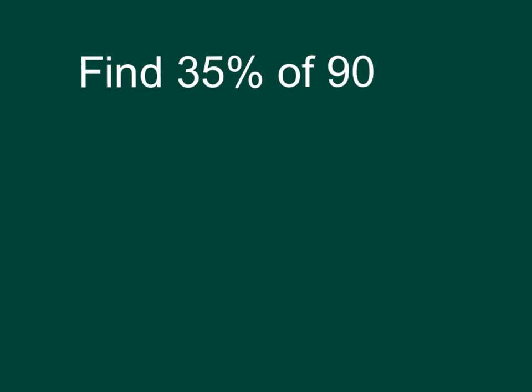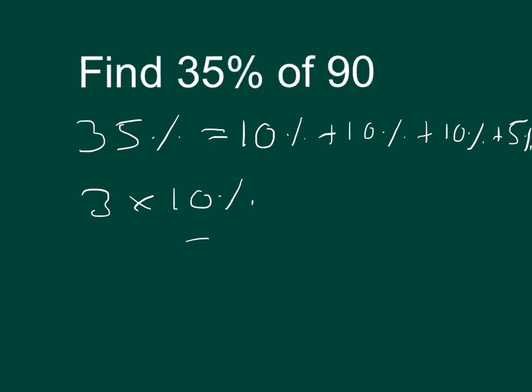If you want to find 35% of 90, then we can make 35% up by having 10% plus 10% plus 10% plus 5%, or 3 times 10% plus 5%. So 3 times 10% will be 30%, and then we'll add on the 5%. Now we already know that 10% equals 9, so 3 times 10% will be 3 nines. So 30% equals 3 times 9, equals 27.